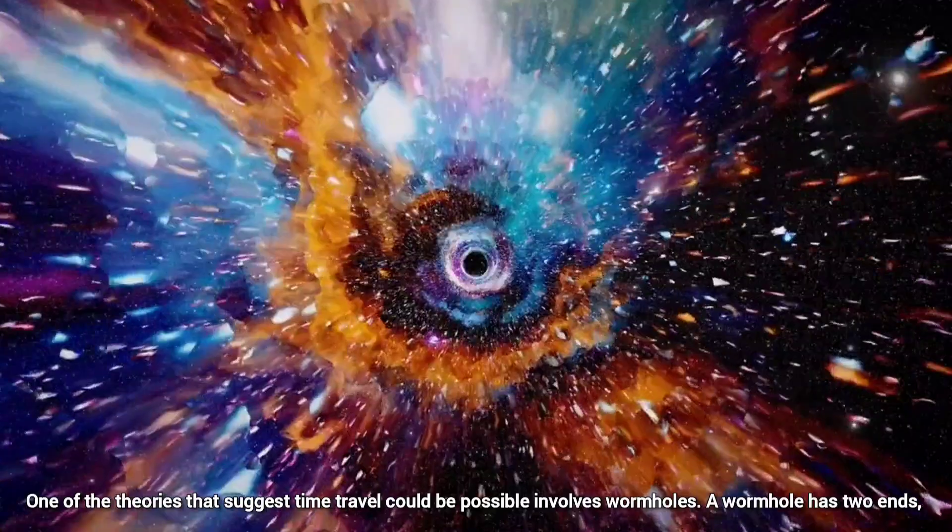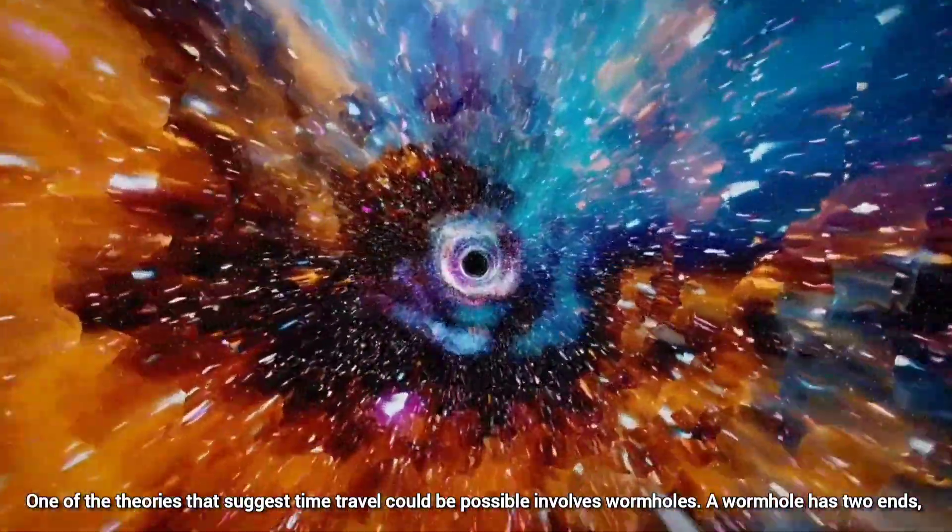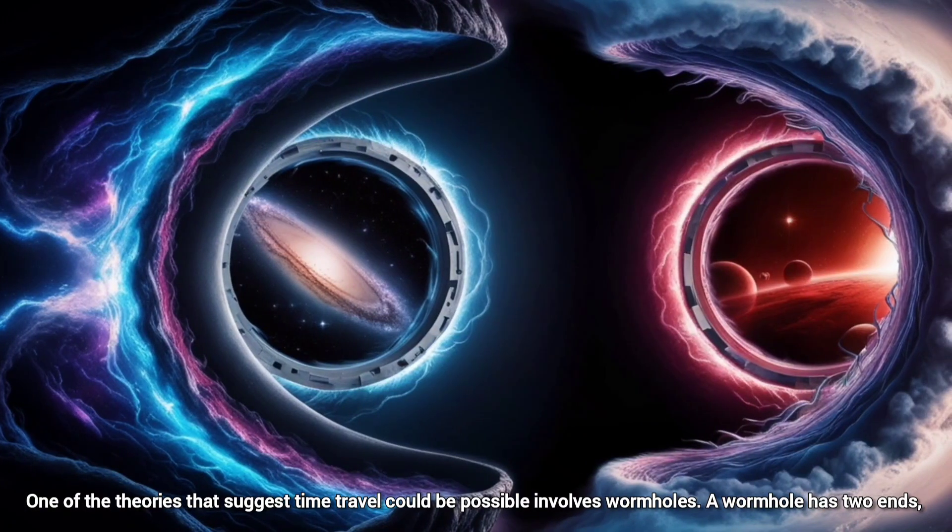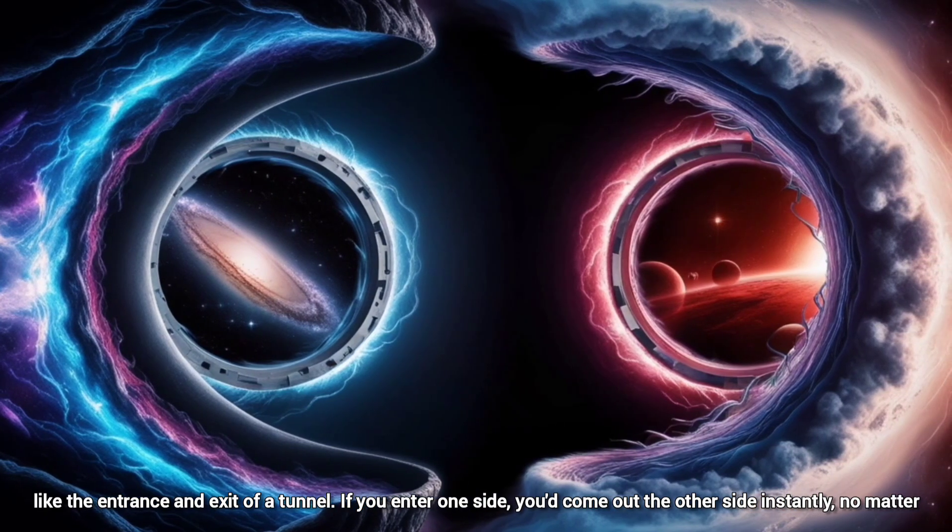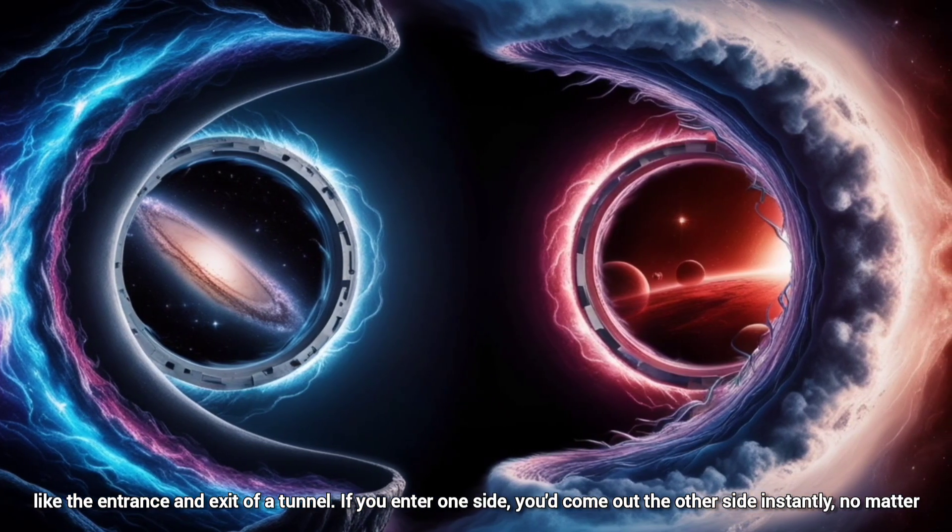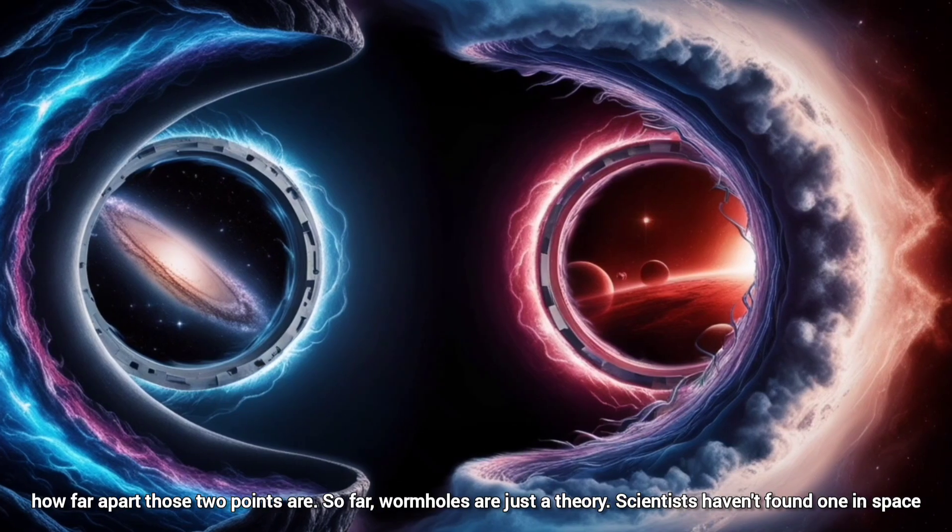One of the theories that suggest time travel could be possible involves wormholes. A wormhole has two ends, like the entrance and exit of a tunnel. If you enter one side, you would come out the other side instantly, no matter how far apart these two points are.